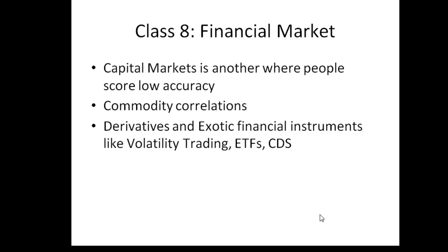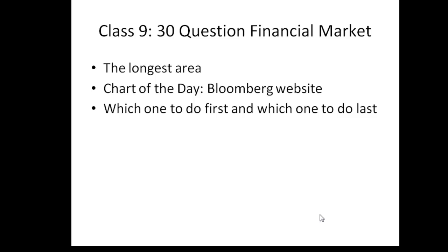Financial markets is the most fascinating and highest-scoring area for the exam, yet the average scores on this module are quite low according to Bloomberg Institute's chart. This is because it requires knowledge about many financial instruments including exotic instruments, volatility trading, ETFs launched in the last 2-3 years, and credit default swaps. This is the biggest part with 30 questions and is the game-changing area. You can study it using the Bloomberg website and checking out the 'Chart of the Day.'